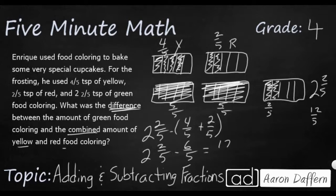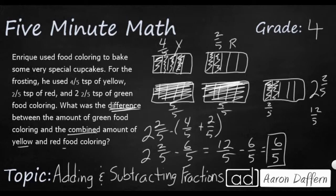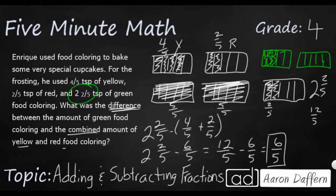Now let me say twelve-fifths minus six-fifths — I can do that! Our denominator stays five. Twelve minus six is going to be six, so our answer initially looks like six-fifths. But since the problem began with a mixed number, we need to end with a mixed number. Six-fifths is five-fifths plus one-fifth, which is the same as one and one-fifth.